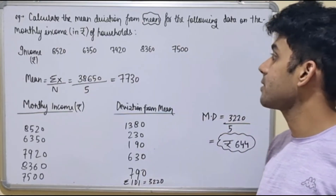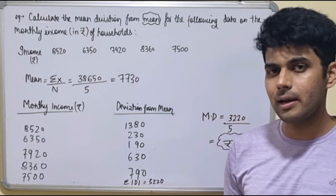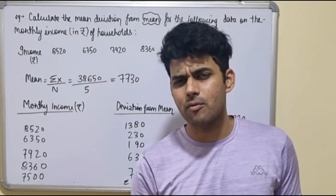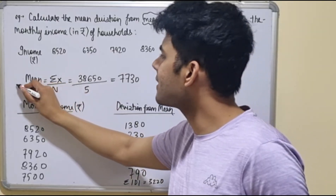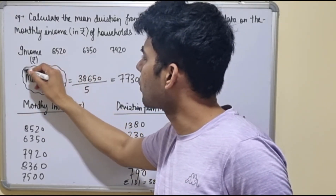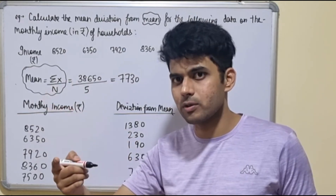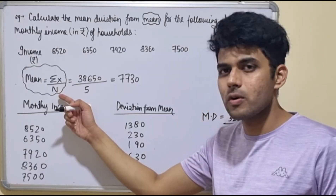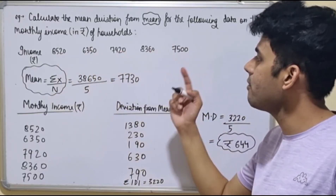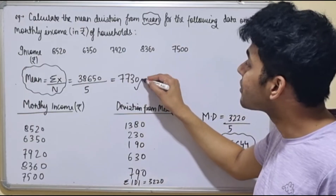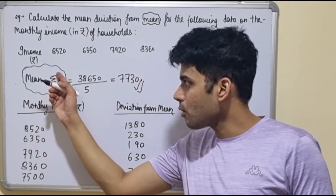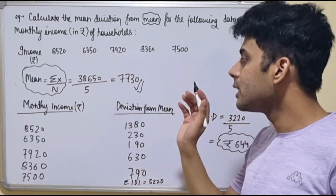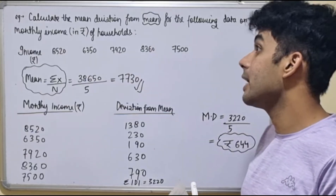For mean deviation, since we are using mean, we apply the formula: mean equals the sum of all observations divided by the total number of observations. The sum of all observations is 38,650, divided by 5, which gives us a mean of 7730. Once you have found the mean, you can go ahead and find the deviation of each item from this mean.